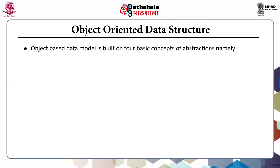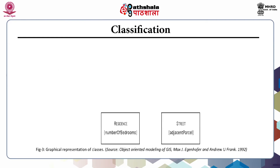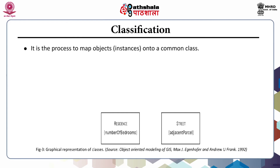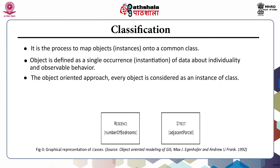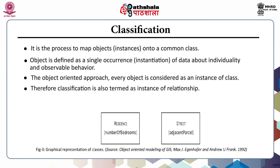Object-based data model is built on four basic concepts of abstractions: classification, generalization, association, and aggregation. Starting with classification, it is the process to map object instances onto a common class. An object is defined as a single occurrence of data about individuality and observable behavior. In the object-oriented approach, every object is considered as an instance of a class. Therefore, classification is also termed as an instance-of relationship.